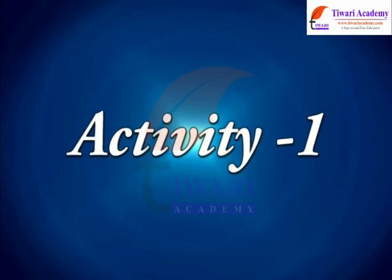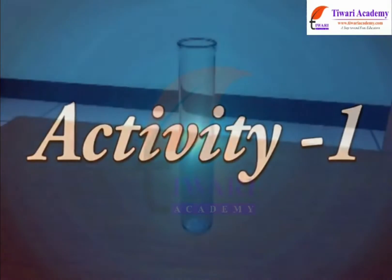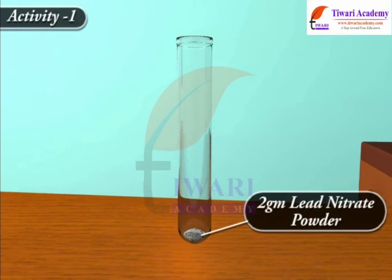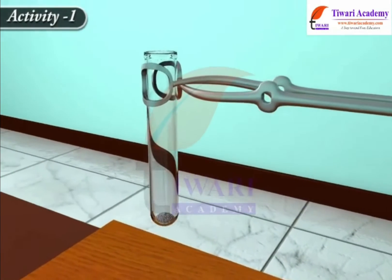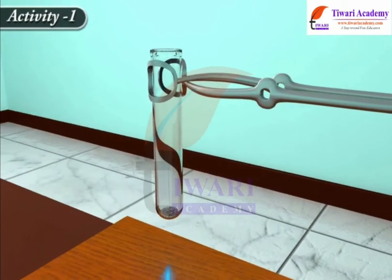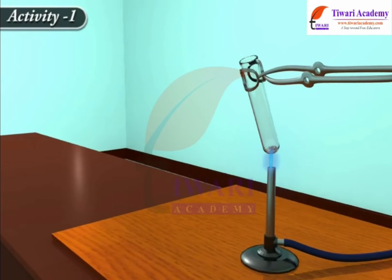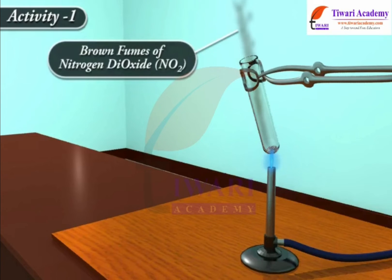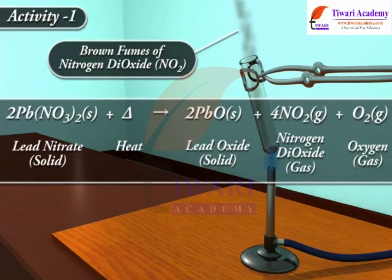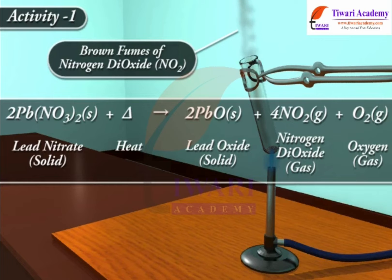Let us do an activity. Take about 2 grams of lead nitrate powder in a boiling tube. Hold the boiling tube with a pair of tongs and heat it over a flame. You will observe the emission of brown fumes of nitrogen dioxide, NO2. The reaction is: 2Pb(NO3)2(s) + heat gives 2PbO(s) + 4NO2(g) + O2(g).